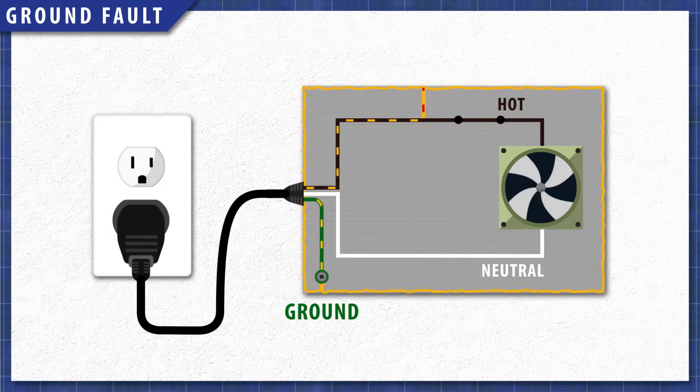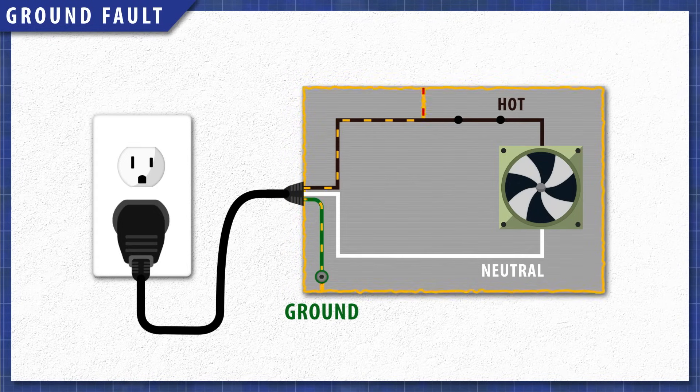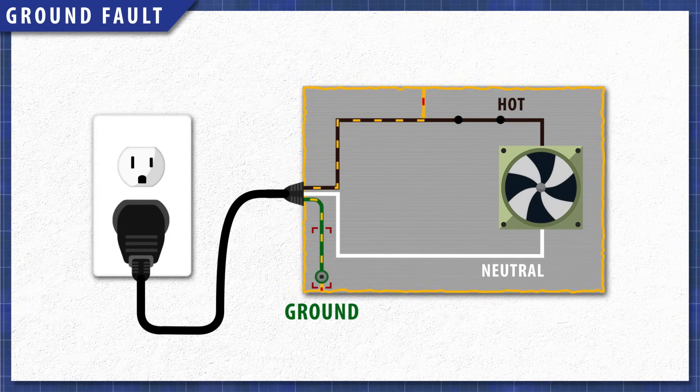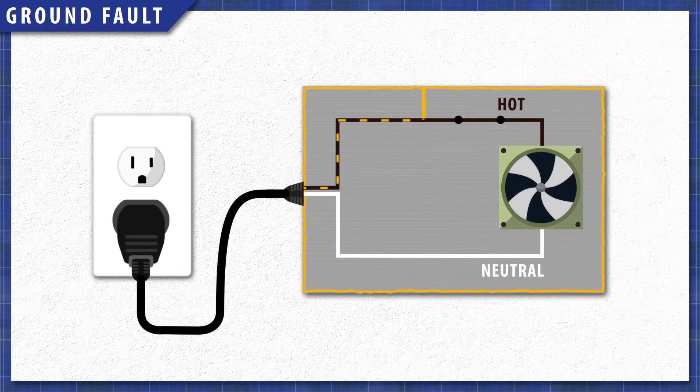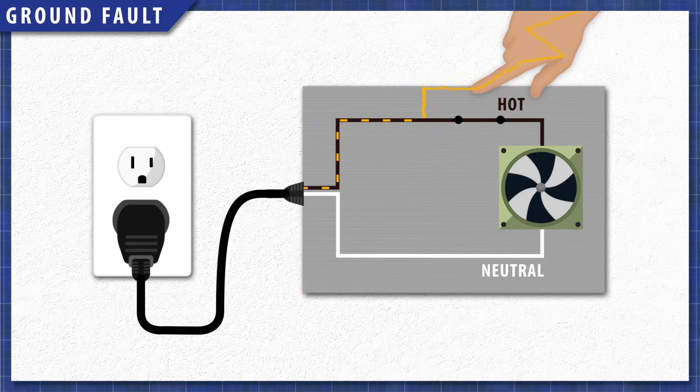A ground fault happens when a hot wire or component touches the metal housing of the appliance. The housing is now energized, and the ground wire returns the electricity to the source. Electricity will always take the path of least resistance. If you touch an energized housing that doesn't have a ground wire, you might be electrocuted.